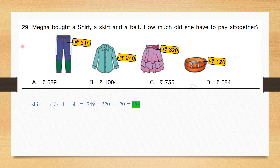Question number 29: Mega bought a shirt, a skirt and a belt. How much did she have to pay altogether? Shirt price is 249, skirt price is 320 and belt price is 120. Adding all three together we get 689. She needs to pay Rs. 689. Correct answer is option A.